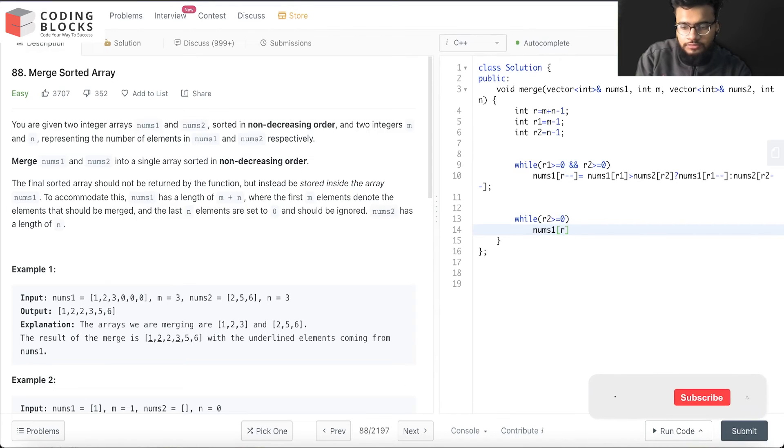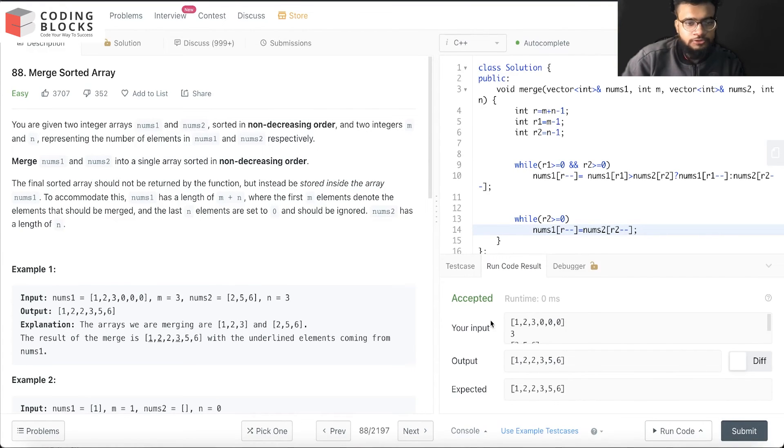of r minus minus is equal to nums2 of r2 minus minus. So we just wrote all the values that will be left in the second array if the lengths are not equal. It got accepted.